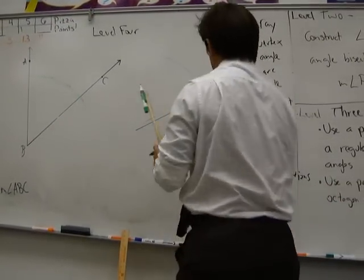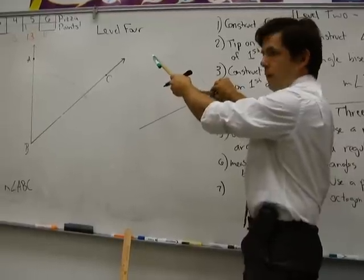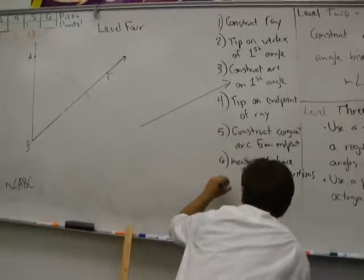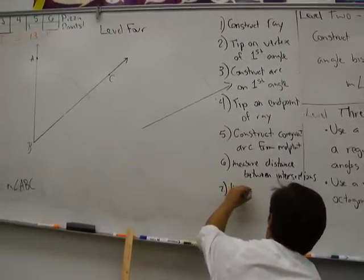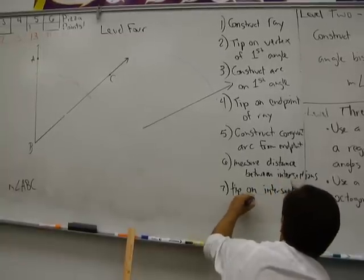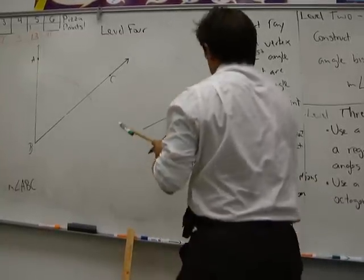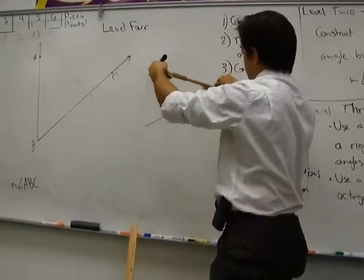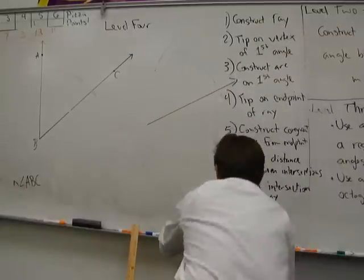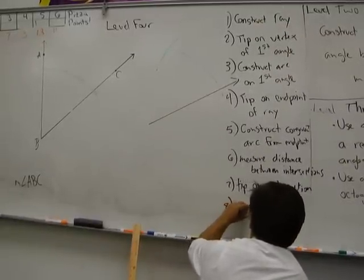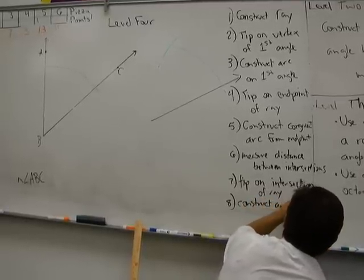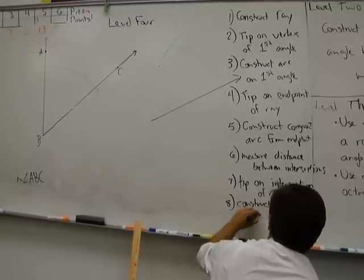Step seven. I put the tip on the intersection of the ray. Step eight. Construct arc using measurement from step six.